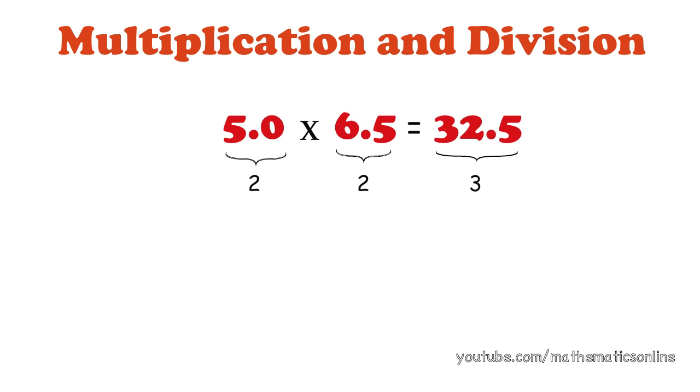But 5.0 and 6.5 are measured to the accuracy of only two significant figures. We cannot have a result that contains three significant figures because we did not measure to that point of accuracy. The answer must contain two significant figures, therefore we round up and the answer is 33.